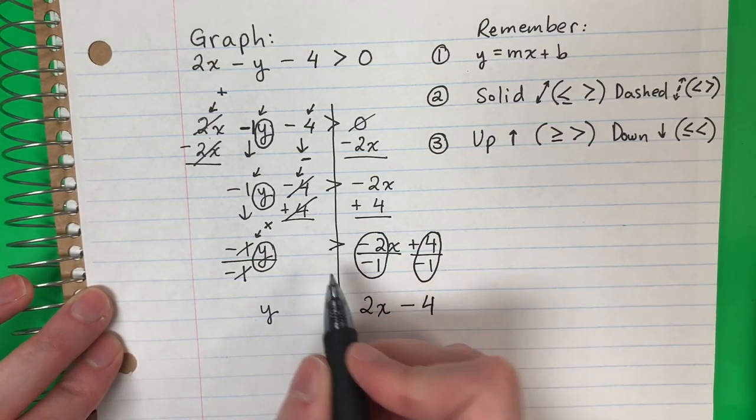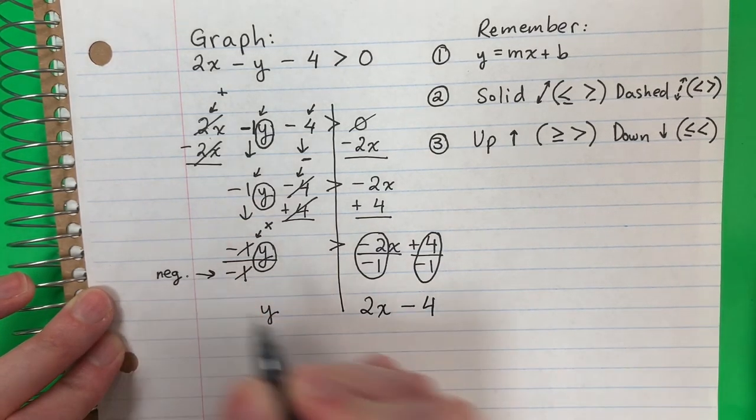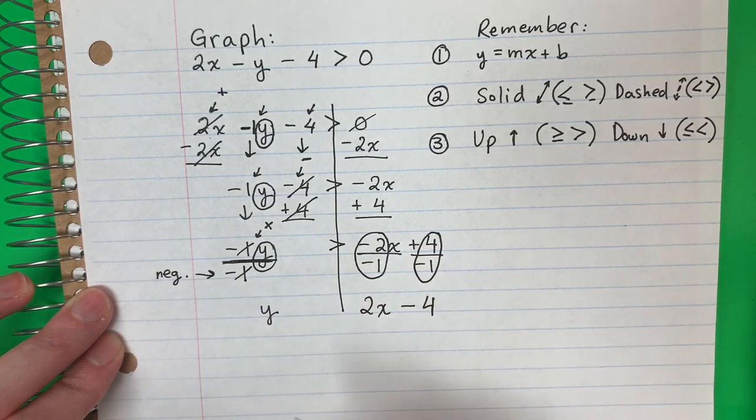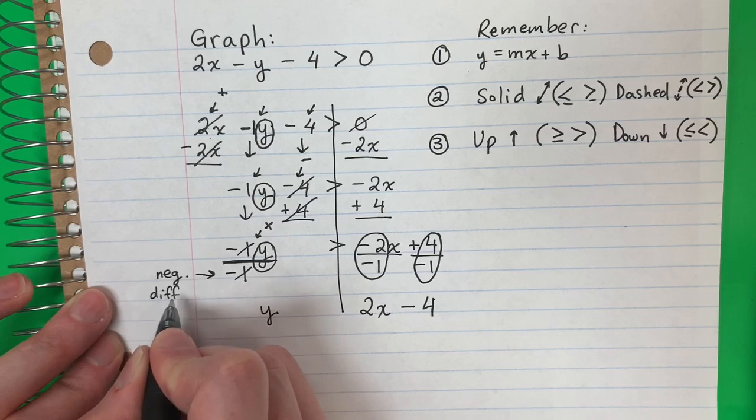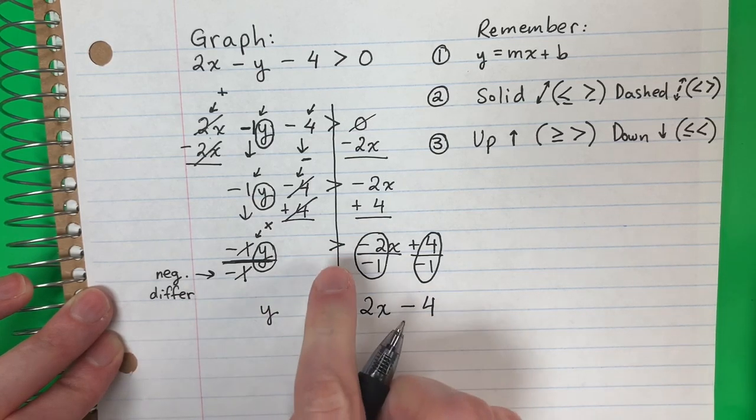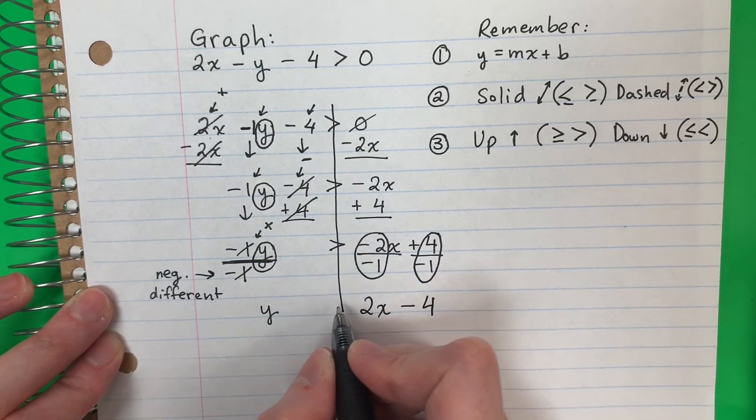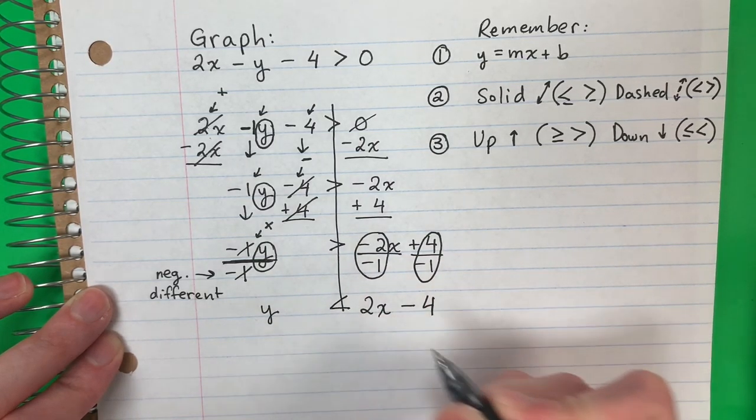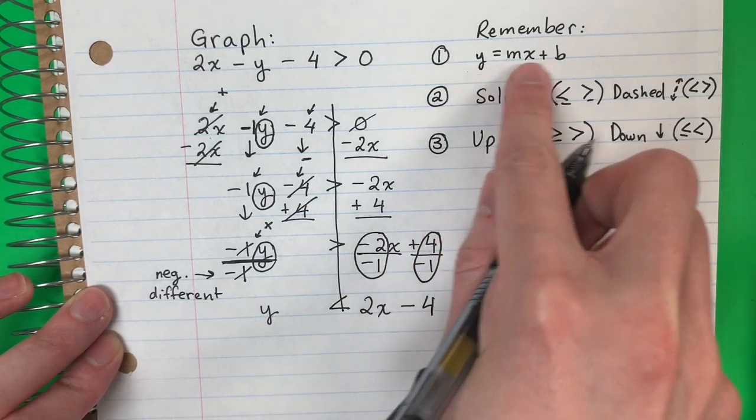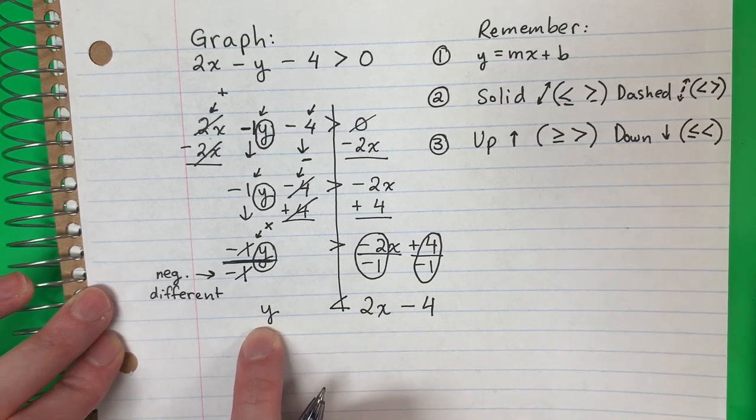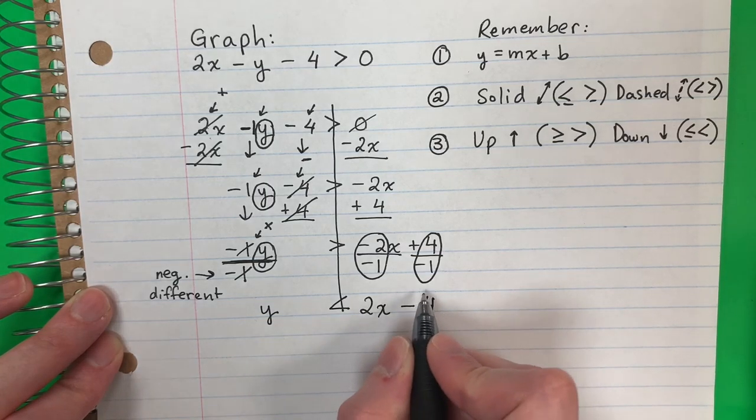Now the sign. Ahora el señal. This is negative. If it's dividing and the number down is negative, you need to have a different sign. Necesito poner un señal diferente. So no more greater than. No más greater. Mayor. Now it's less. Ahora es menor. And now it's in slope intercept form. Ahora está in slope intercept form. The y is alone on the left. La y está sola a la izquierda. And the mx is in the middle. Y el mx está en el medio.